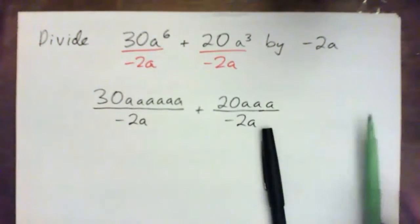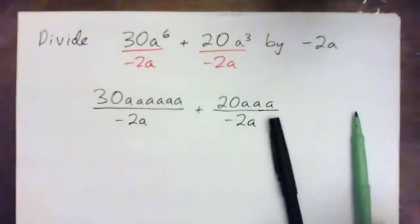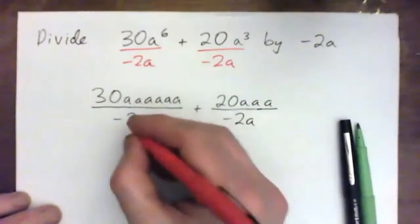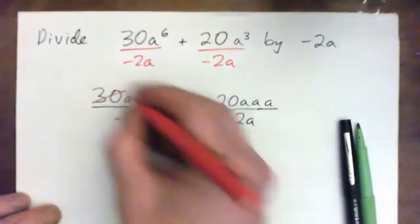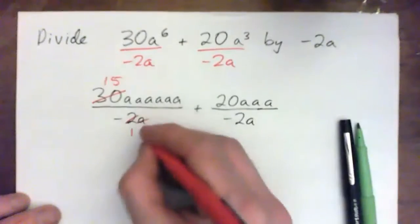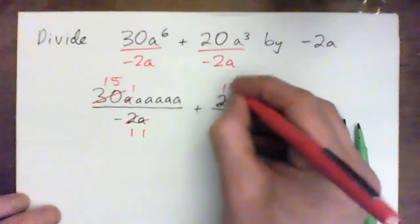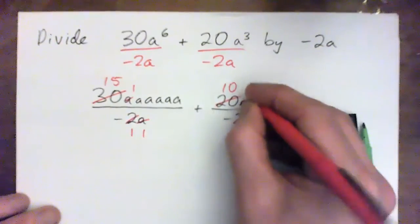So everybody watching now at home, I hope you've all pressed pause and tried this. I'm going to run through it now because 2 into 2 goes once, 2 into 30, 15. A into A goes once here and here. 2 into 2 goes once, 2 into 20 goes 10 times. A into A goes once here and here.